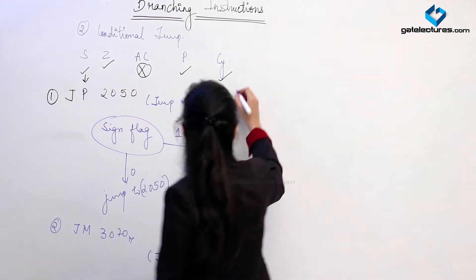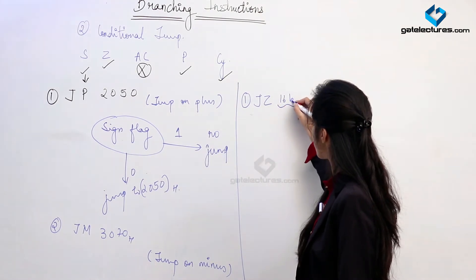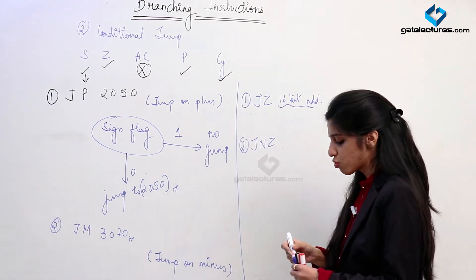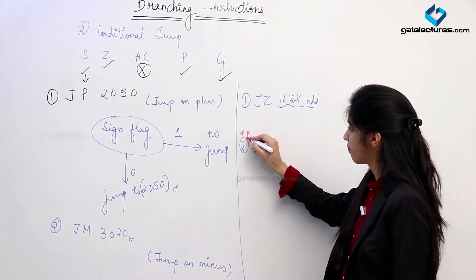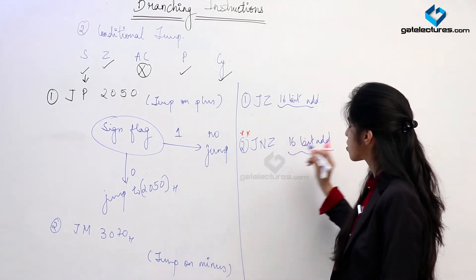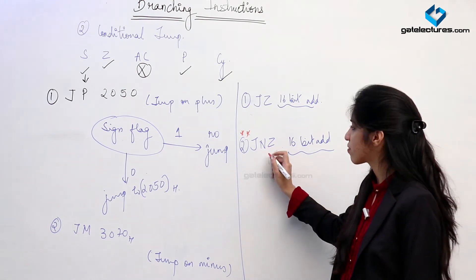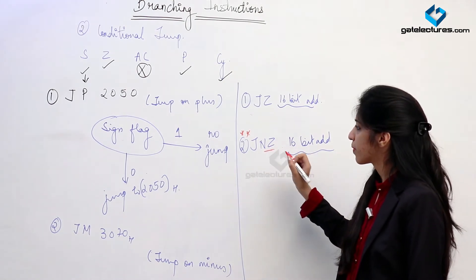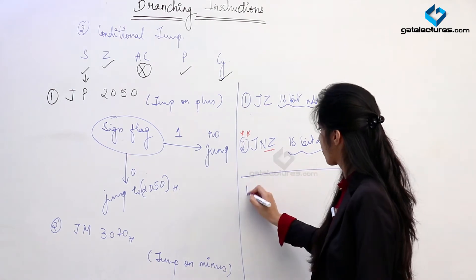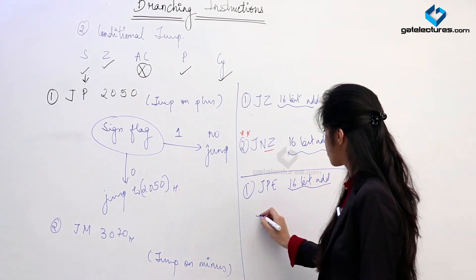Based on the zero flag, we have two instructions: JZ (jump on zero) and JNZ (jump on not zero). We use JNZ widely in programming. For JNZ, we check the status of the zero flag — if the zero flag is not 1 (that is, the result is not zero), we make the jump. Based on the parity flag we also have two instructions: JPE (jump on parity even) and JPO (jump on parity odd).